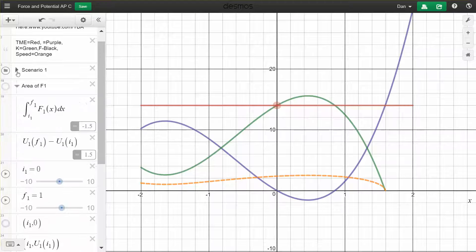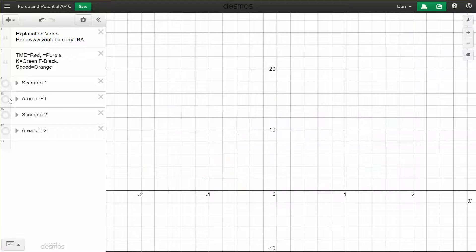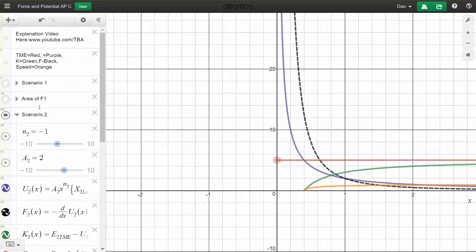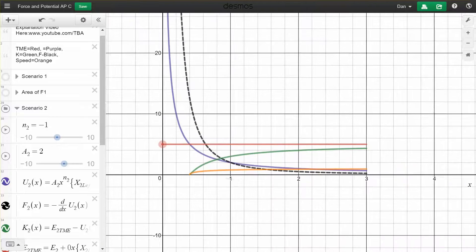And I made a second scenario. I also did it in such a way that if you want to add more scenarios you can, you basically just keep copying my formulas and changing the subscripts. And with scenario two, let me turn off one first, what I made is basically a x to the n power. So right now I have a set at negative one for the power, kind of like an inverse squared relationship like gravity or electrostatics, and the potential energy would be a negative one power, you know, sort of one over r, one over x. And we get kind of the same thing.